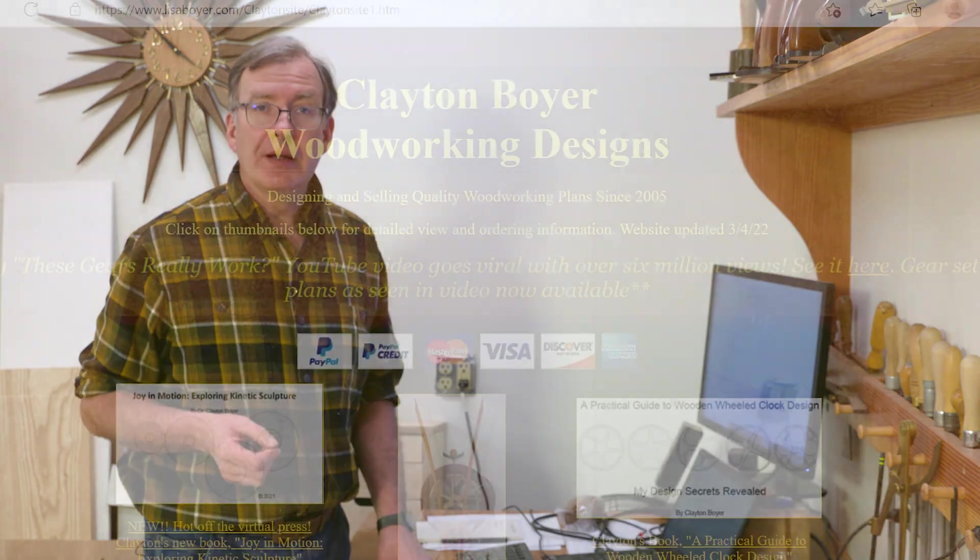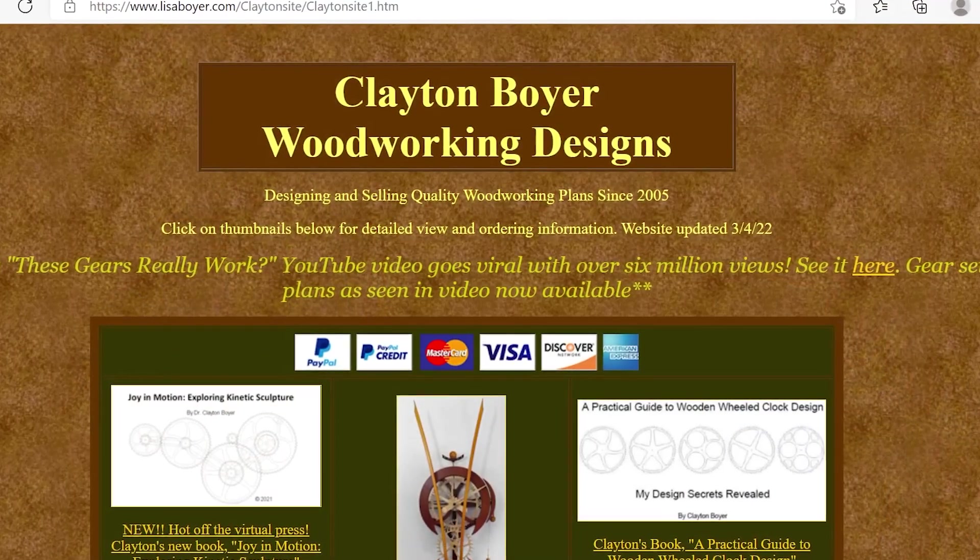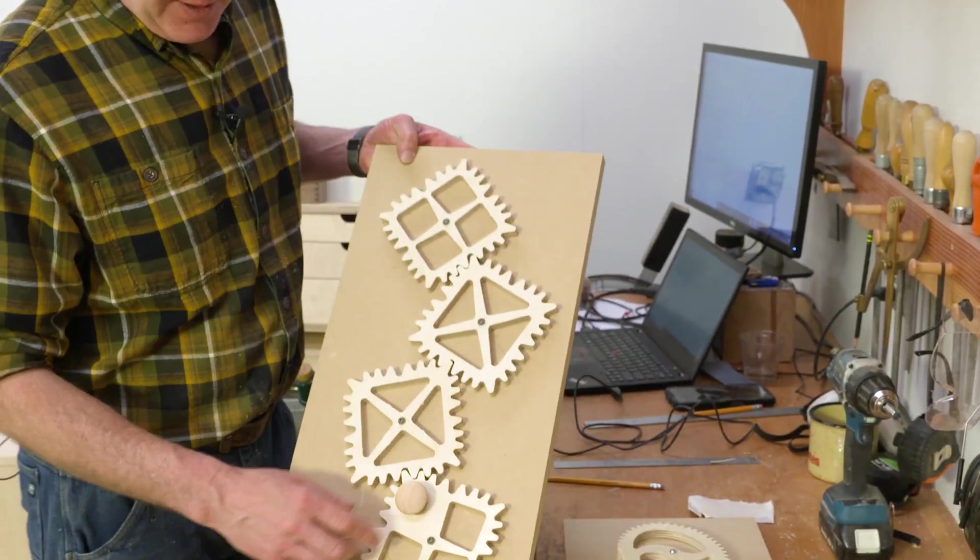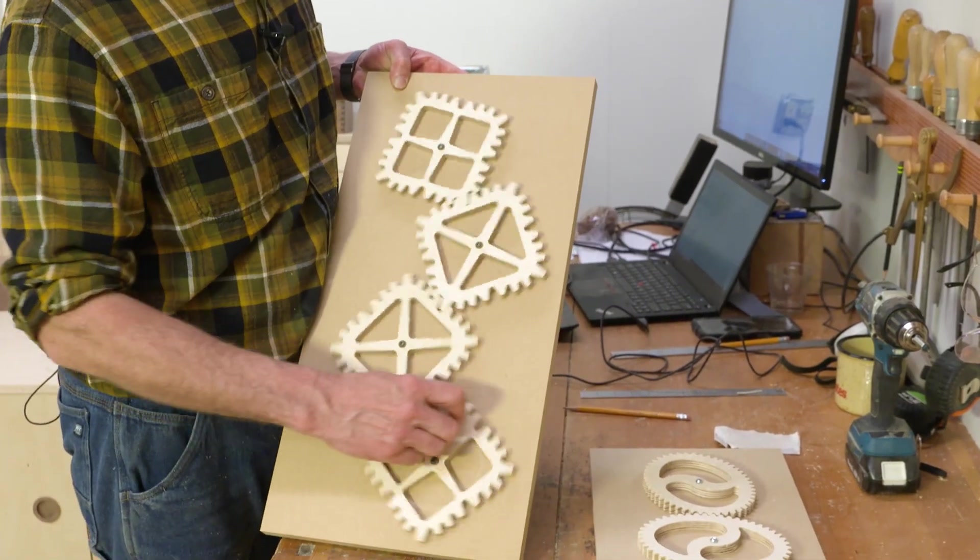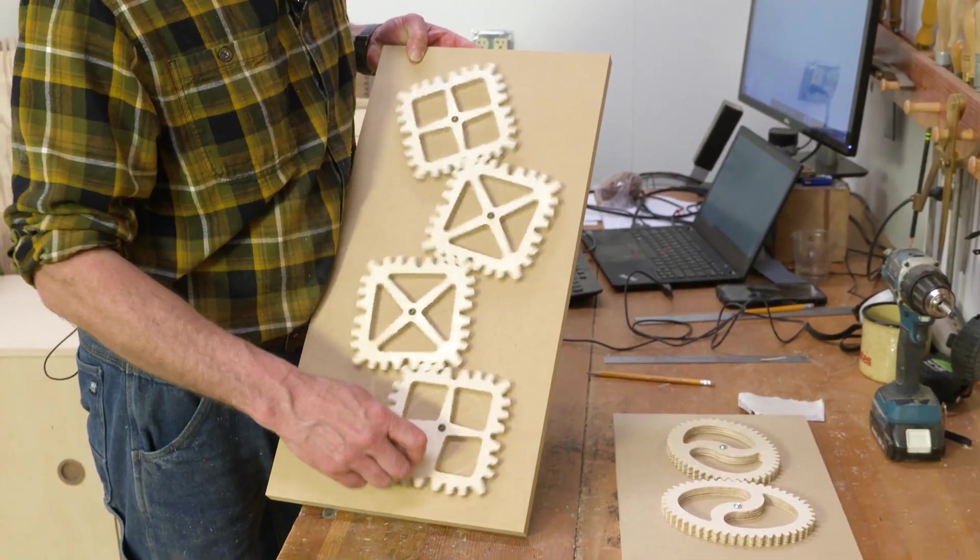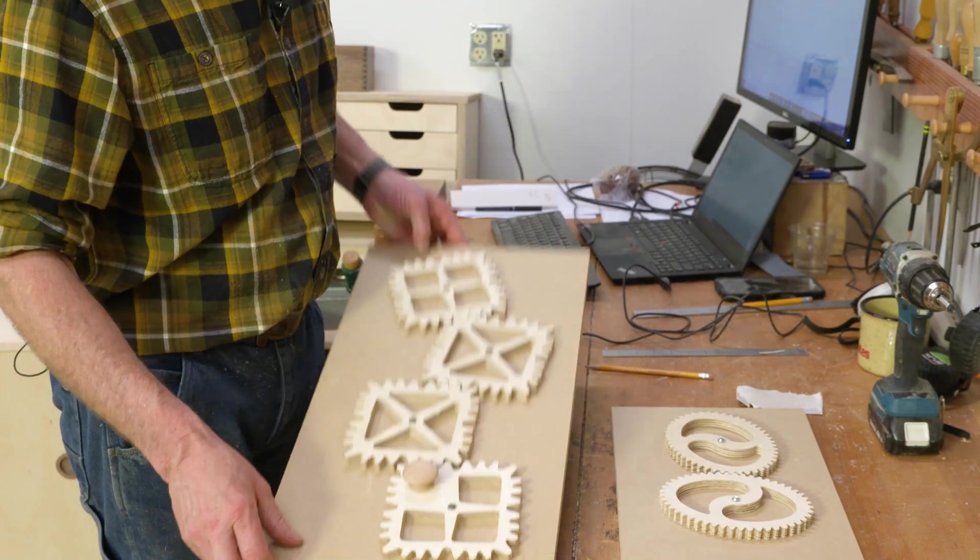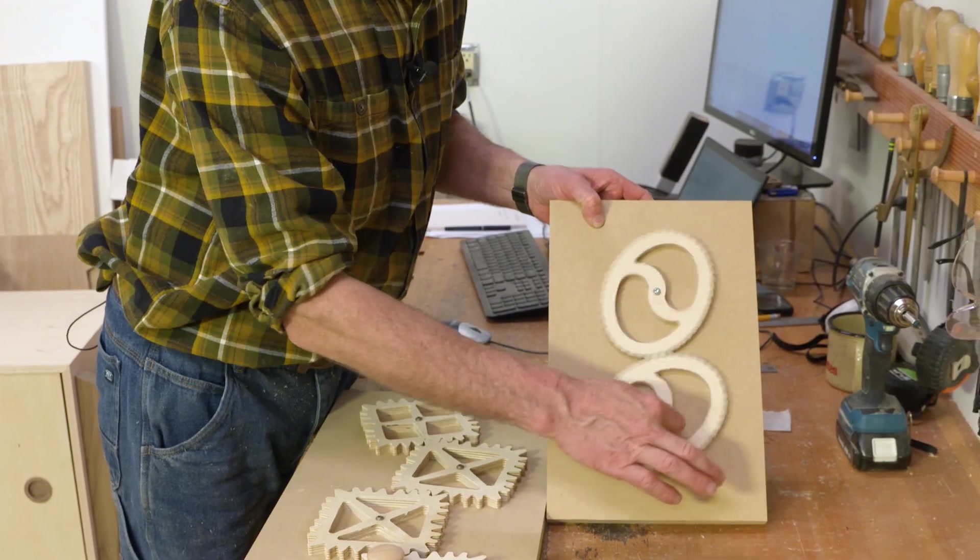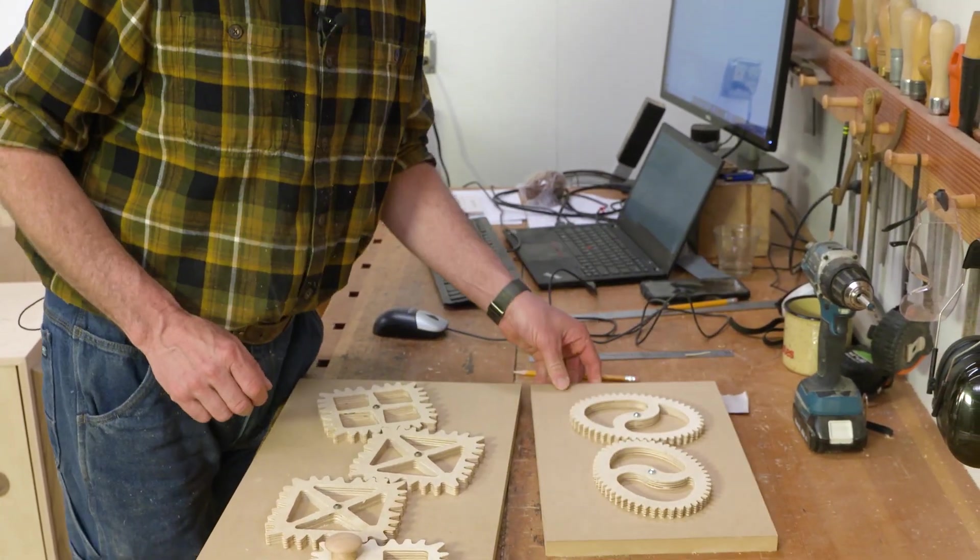Now, one fun thing about gears is they're not all round. I decided to have some fun and I purchased a download from Clayton Boyer Designs. And it's called Weird Gears. And I got about eight or nine different gear patterns that are really fun. So I went ahead and made a couple of them and I'll show you them. Here's one that I love. Square gears. Who would have thought? Here I have elliptical gears. And finally, these are called Nautilus gears.